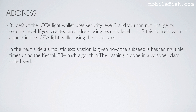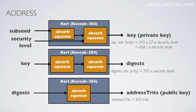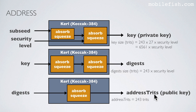In the next slide, a simplistic explanation is given of how the sub-seed is hashed multiple times using the Keccak-384 hash algorithm. The hashing is done in a wrapper class called Curl. The key is dependent on the sub-seed and security level. The generated key is the private key, which will be used to sign the transaction. The digest is dependent on the key, and the address tryte value is dependent on the digest. If you convert this value to trytes it becomes the address — the address tryte value is the public key, indirectly dependent on the sub-seed and security level.